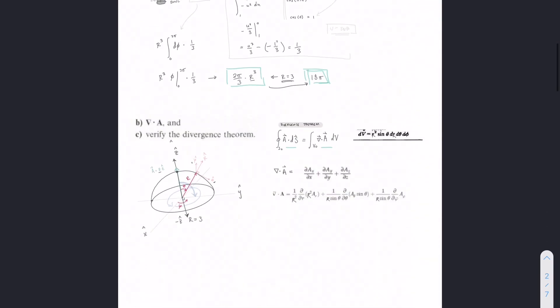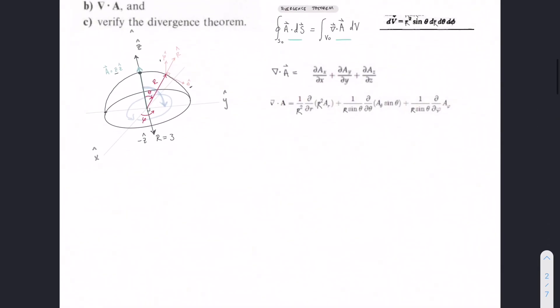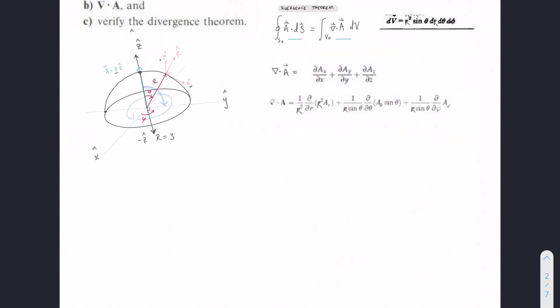Okay, so for this part two, we are going to do this gradient dot A. So given our A vector from the first part, gradient dot A, and then we're going to verify the divergence theorem.